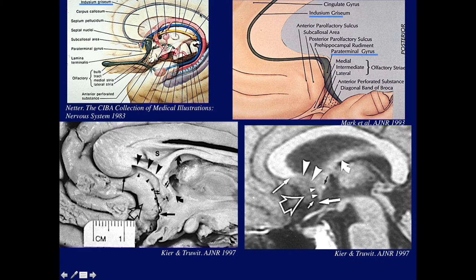We talked about the indusium griseum. As it moves anteriorly, it becomes the paraterminal gyrus. It then travels underneath the genu of the corpus callosum and becomes the paraterminal gyrus, which then continues as the diagonal band of Broca back into the temporal lobe. Here's a dissection of the medial surface of the brain where we can actually identify the paraterminal gyrus — this would be its location. This is the paraterminal gyrus, part of the supracallosal hippocampus.